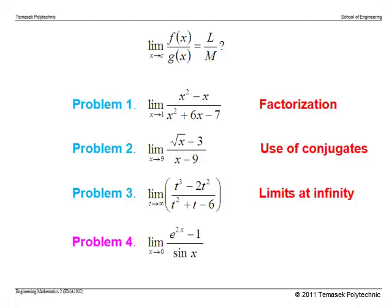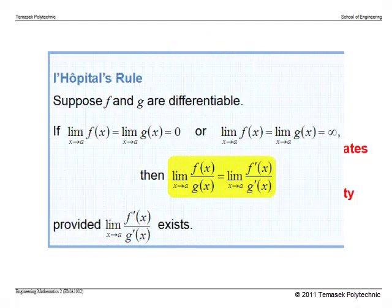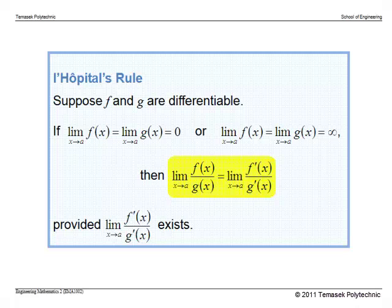We need to use L'Hospital's Rule. Let's review it. Suppose f and g are differentiable functions and their limits as x tends to a are either both 0 or both infinity — meaning the L'Hospital's Rule conditions hold. In that case, L'Hospital's Rule says the limit as x tends to a of f(x)/g(x) equals the limit as x tends to a of f'(x)/g'(x), provided that second limit exists.